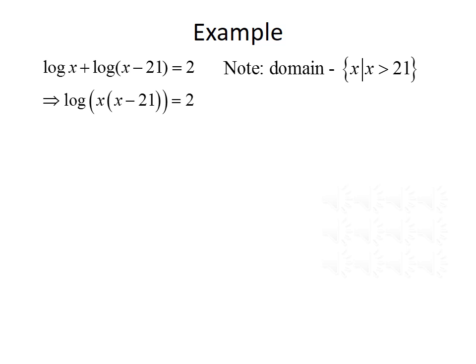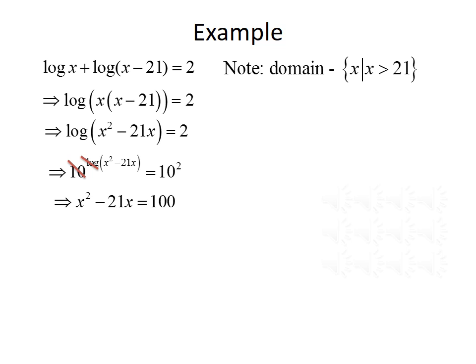We want to first combine the two logarithms using the product property. Since we have log x plus log of (x minus 21), we can combine that into one log: log of x times (x minus 21), equal to 2. Distributing the x inside the logarithm gives us log of (x squared minus 21x) equals 2. Next, to get rid of the logarithm, since we have log base 10, we use an exponential of base 10 on both sides. So 10 raised to the log of (x squared minus 21x) equals 10 squared, and since they are inverses they cancel, leaving x squared minus 21x equals 100.